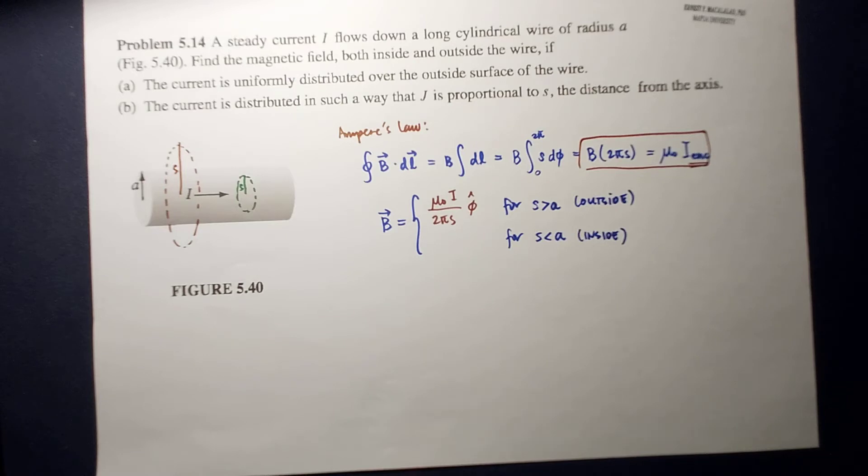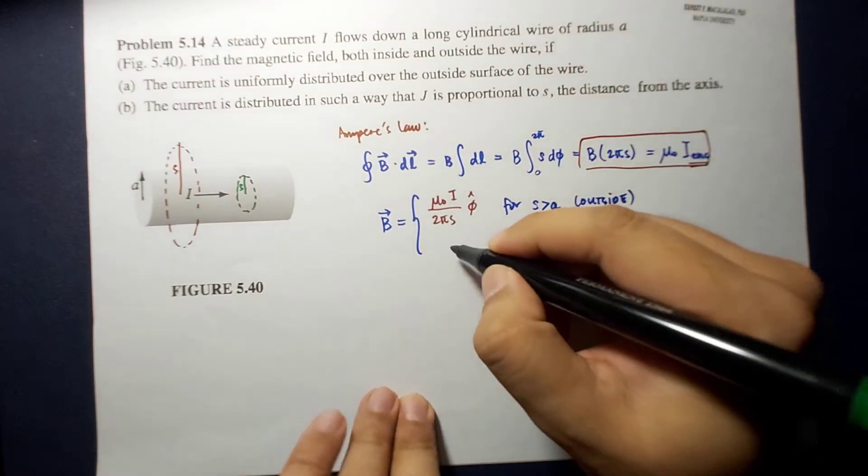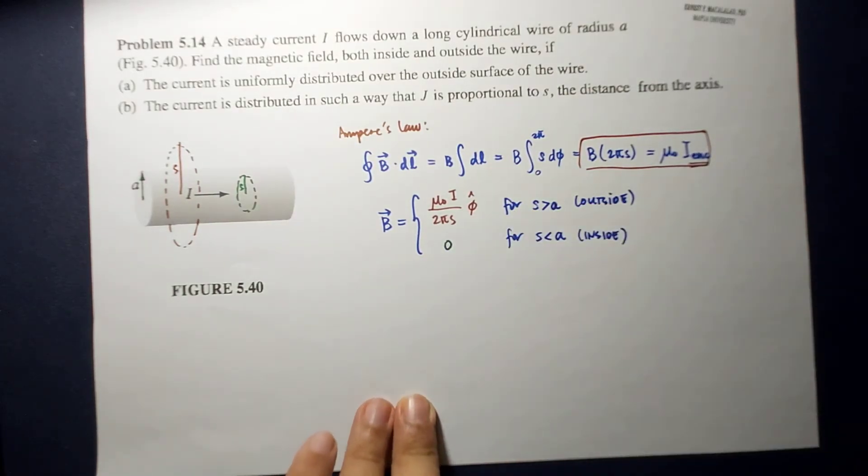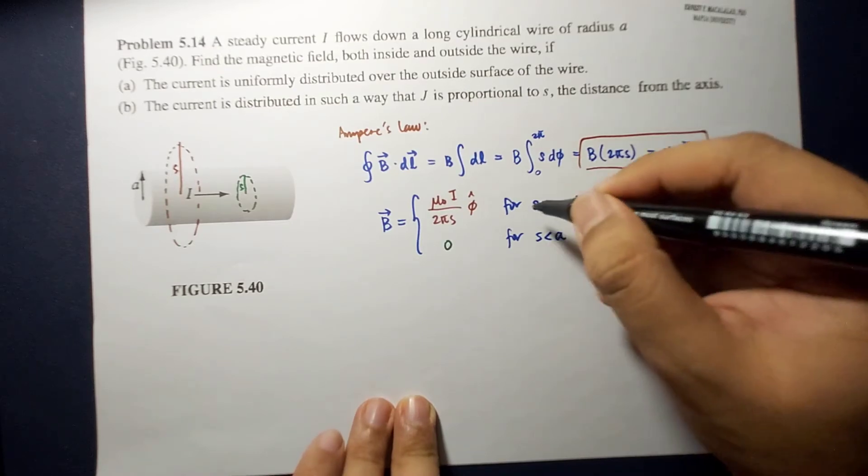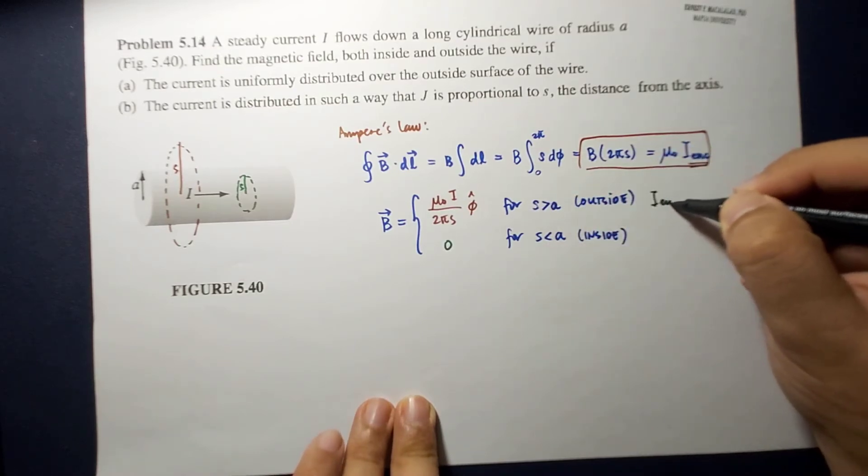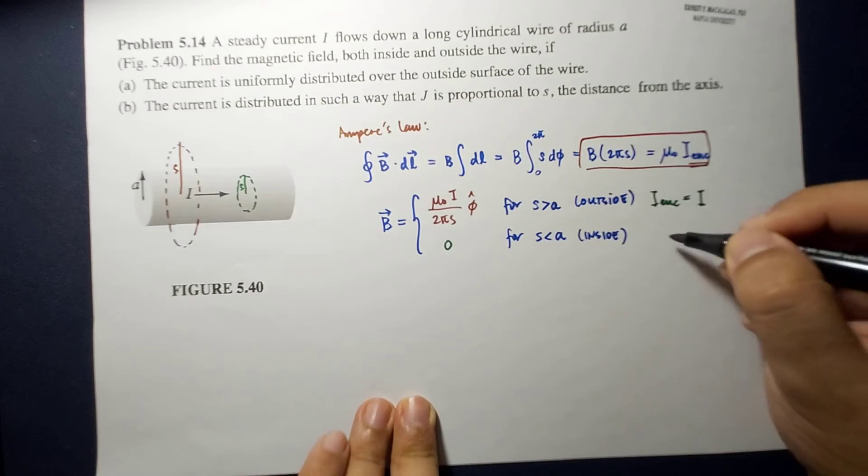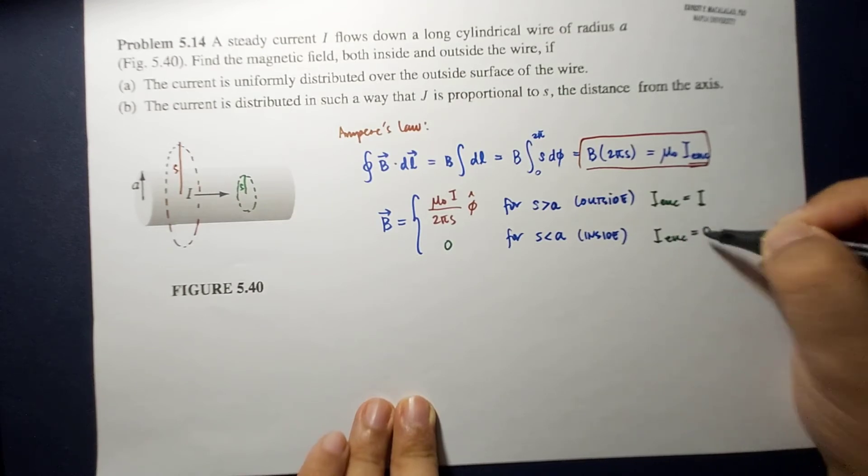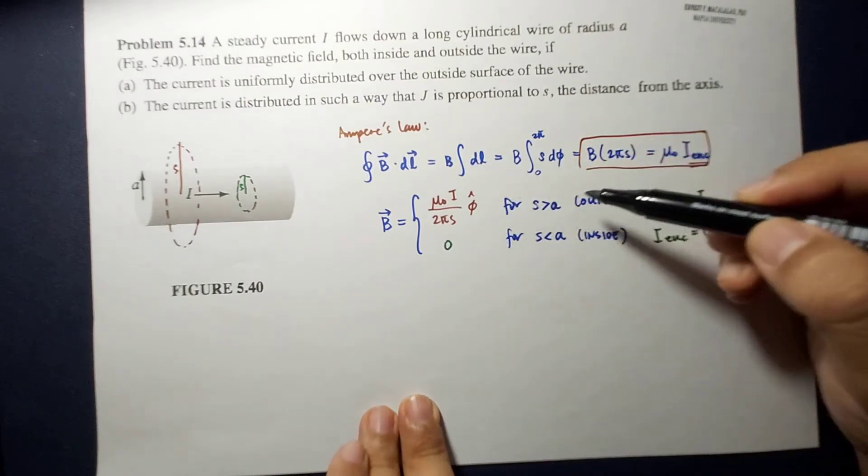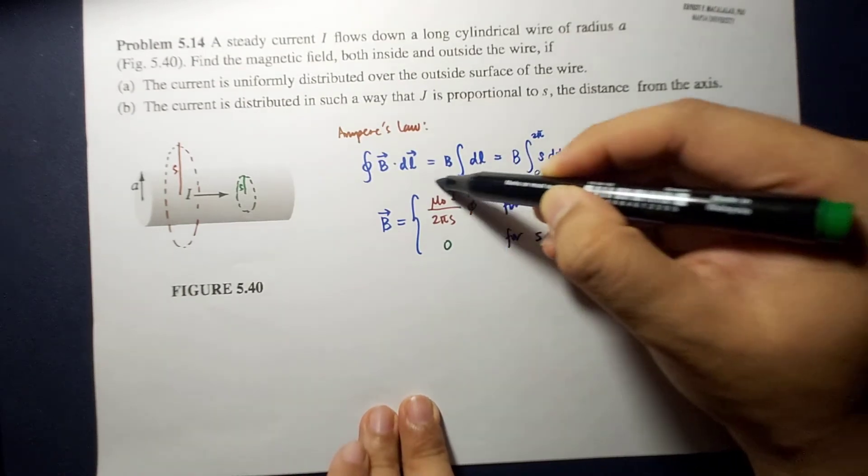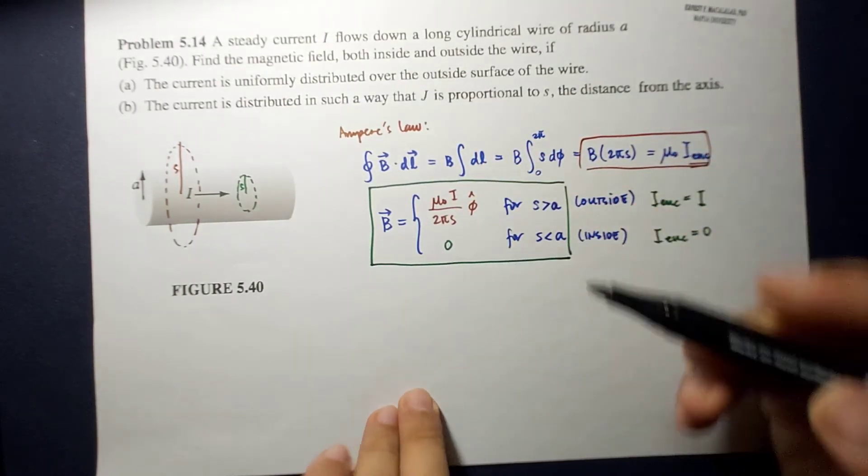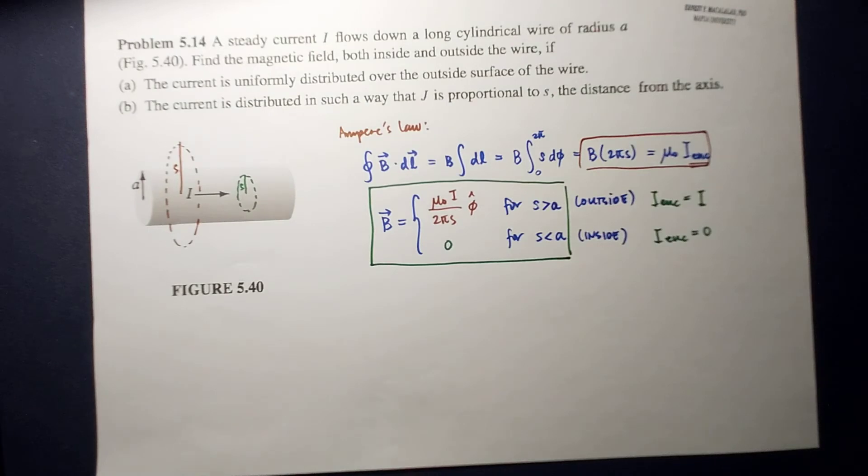So, for inside, there is no I enclosed. So, therefore, this is 0. So, again, for outside, the I enclosed is I. And for inside, the I enclosed is 0. So, this is the magnetic field for inside and outside the sphere.